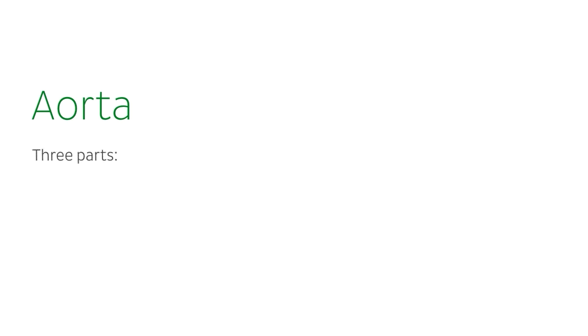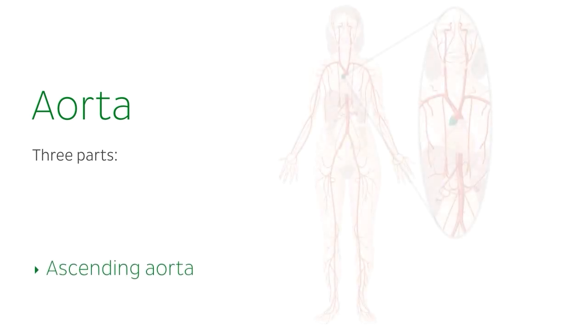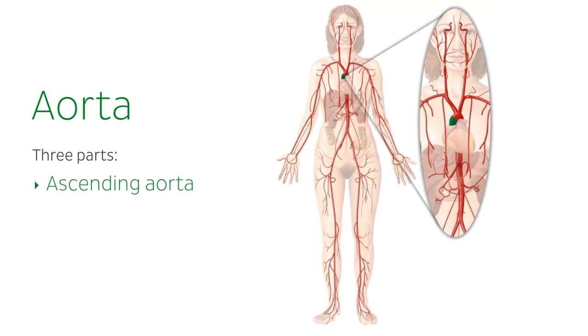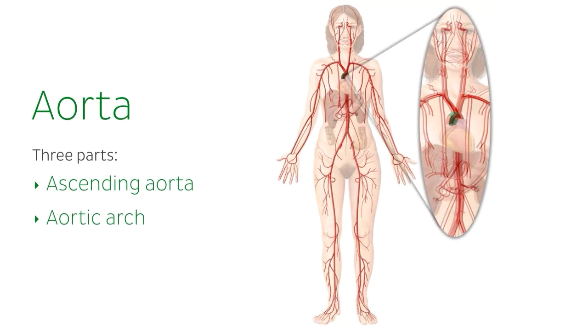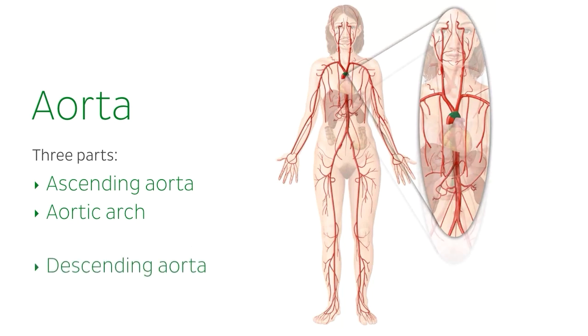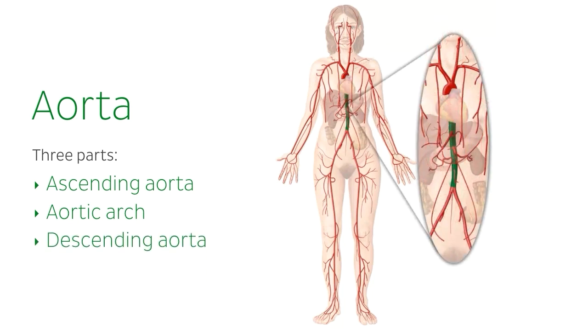The aorta arises directly from the heart, after which it can be divided into three parts: the ascending aorta, the aortic arch, and the descending aorta, which is comprised of a thoracic part called the thoracic aorta.